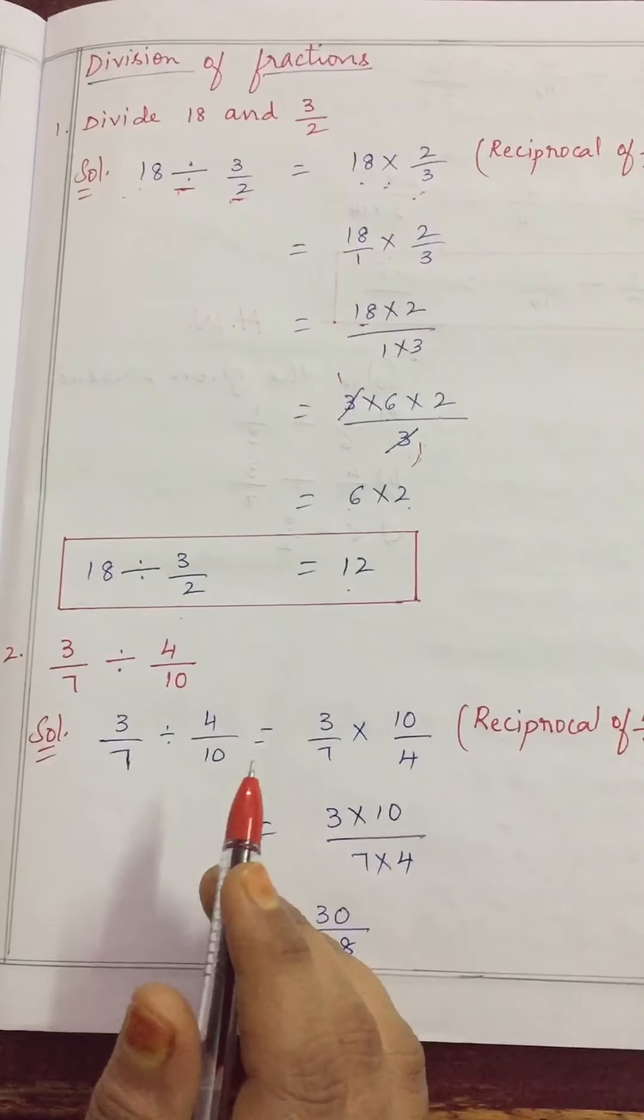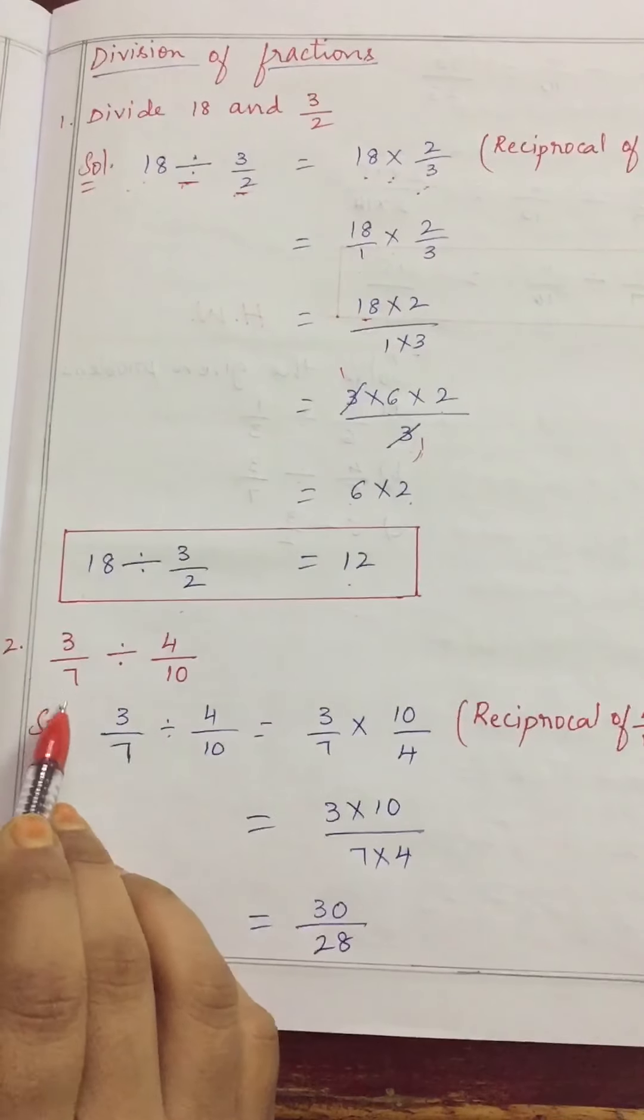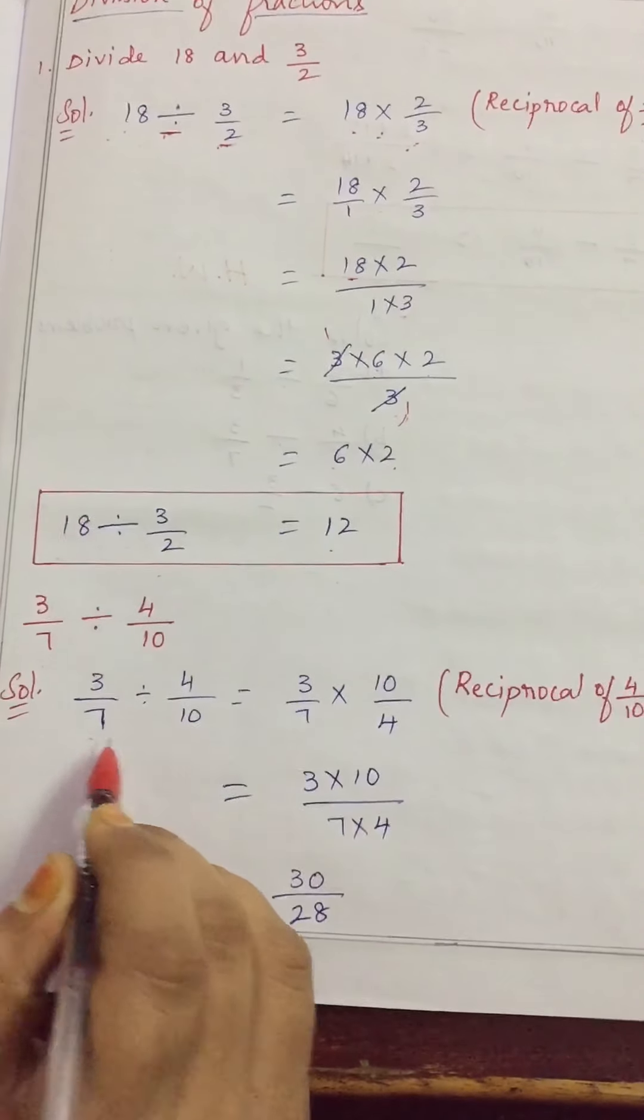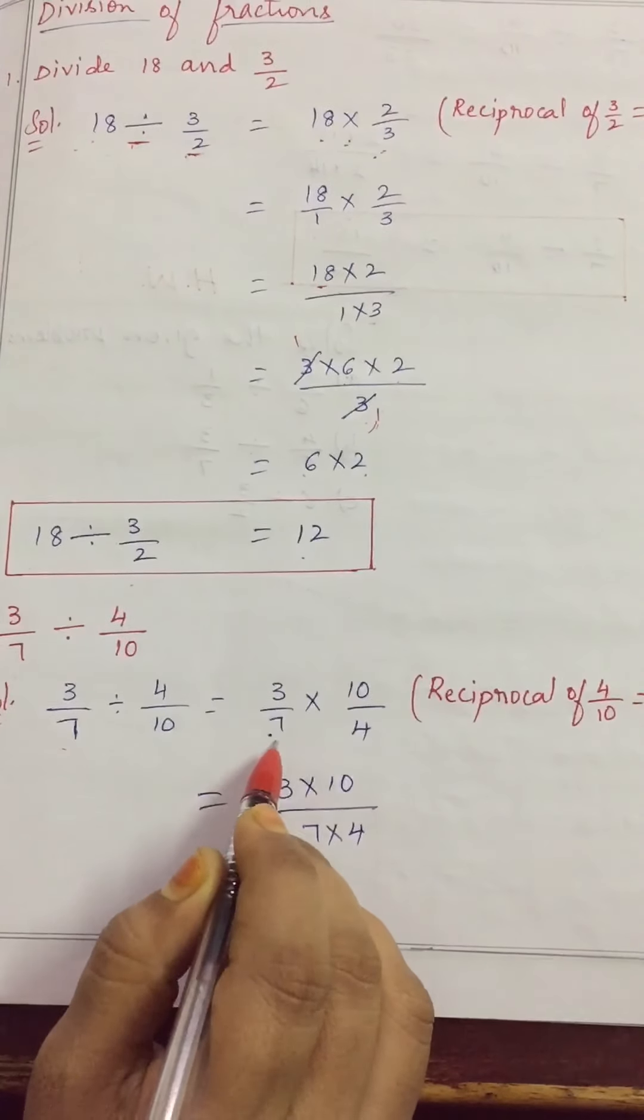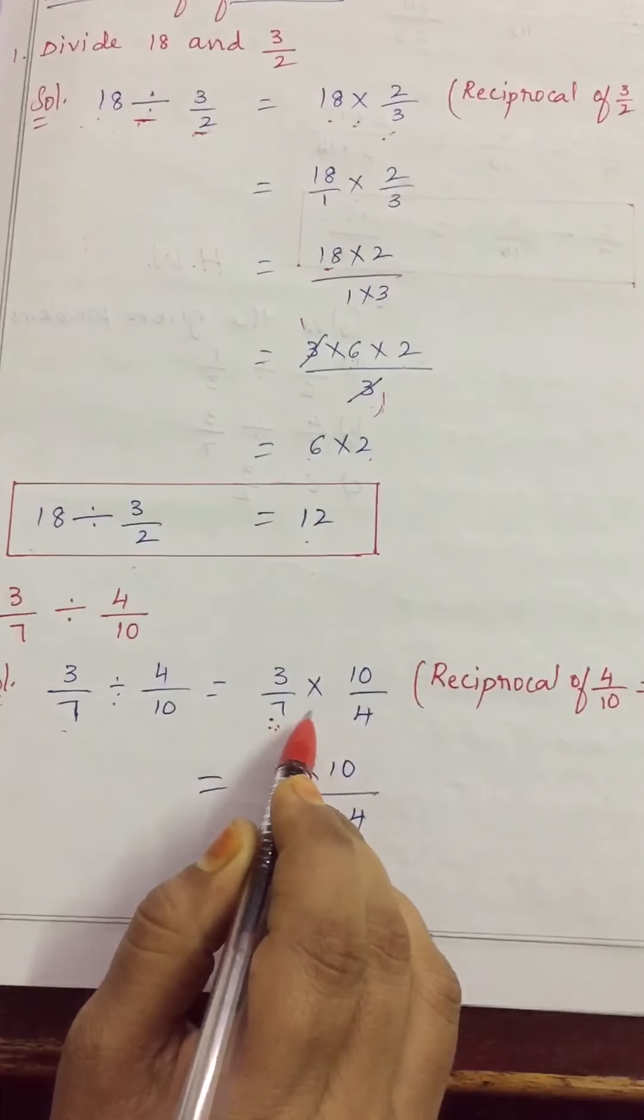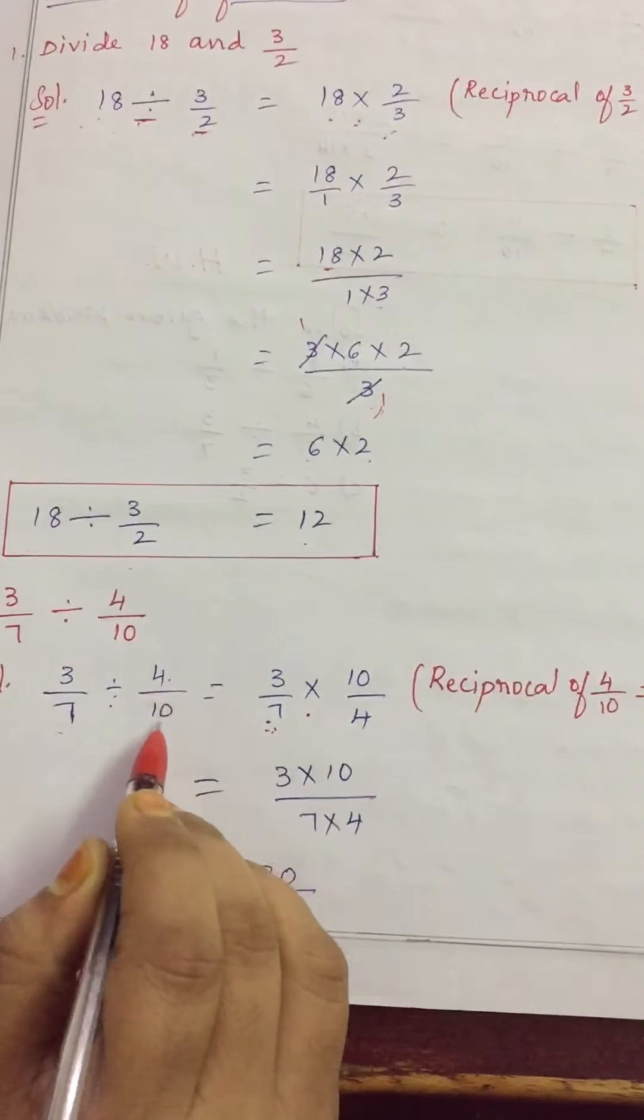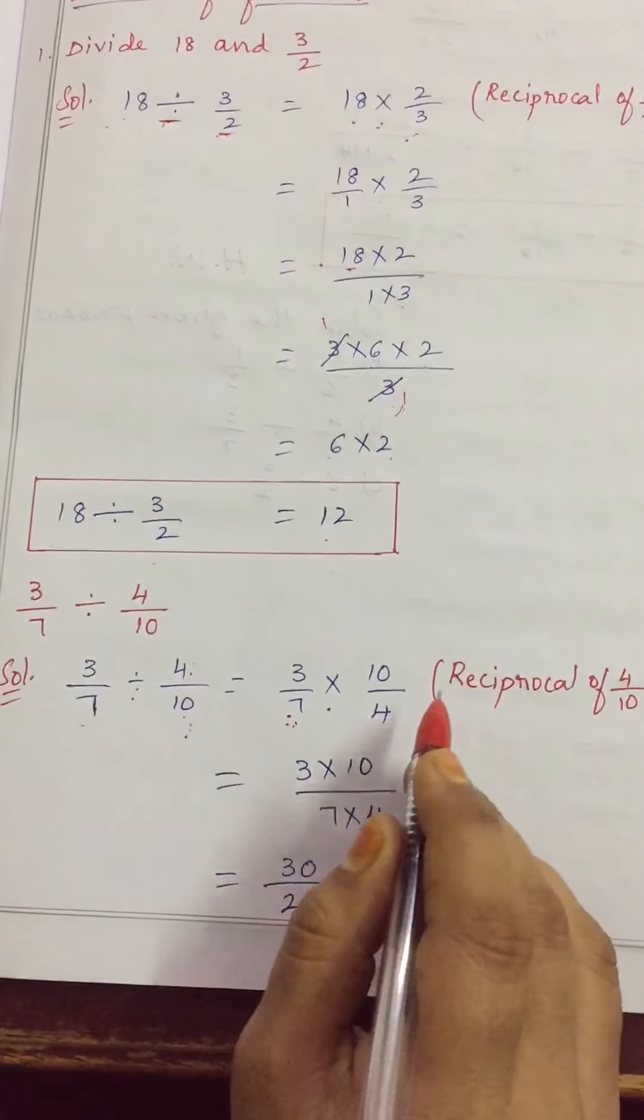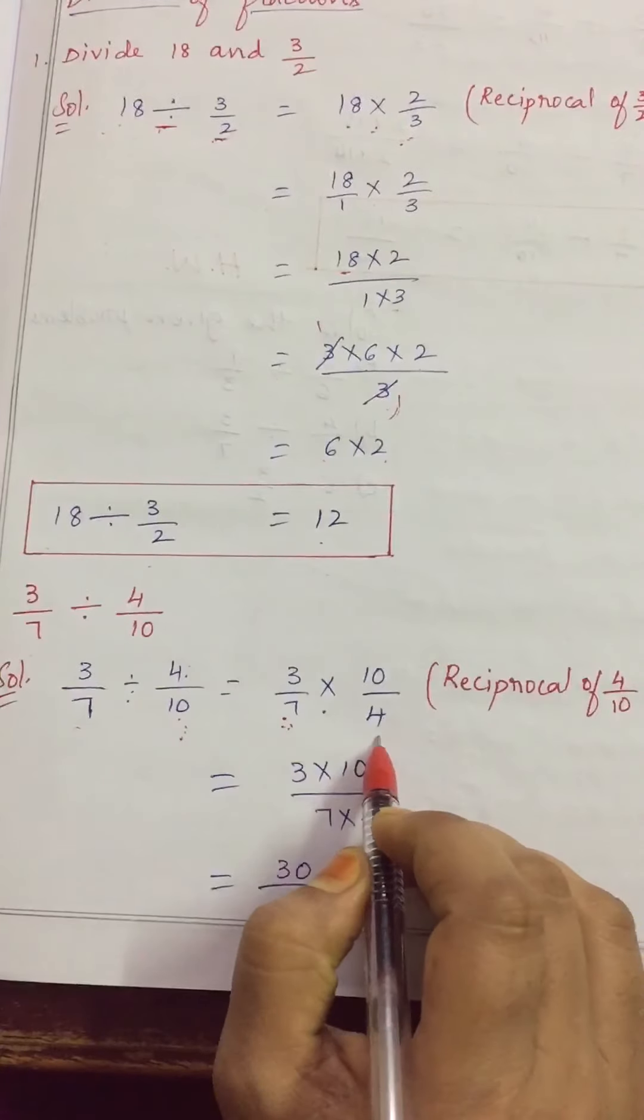Let's see one more problem children. Here I am dividing 3 by 7 with 4 by 10. As I told you first number as it is. First number or first fraction as it is we need to write. Division become multiplication and 4 by 10 this fraction reciprocal we need to take. 4 by 10 reciprocal is 10 by 4.